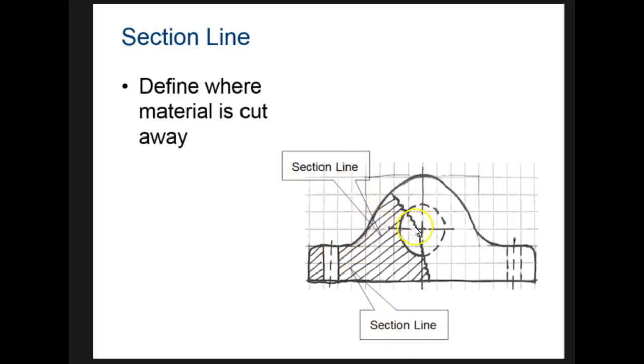Section lines are where we've actually come in here and cut part of this off so that we can see the inside. These are parallel lines that are just showing that that's the textured inside material. We'll talk about those more later on.